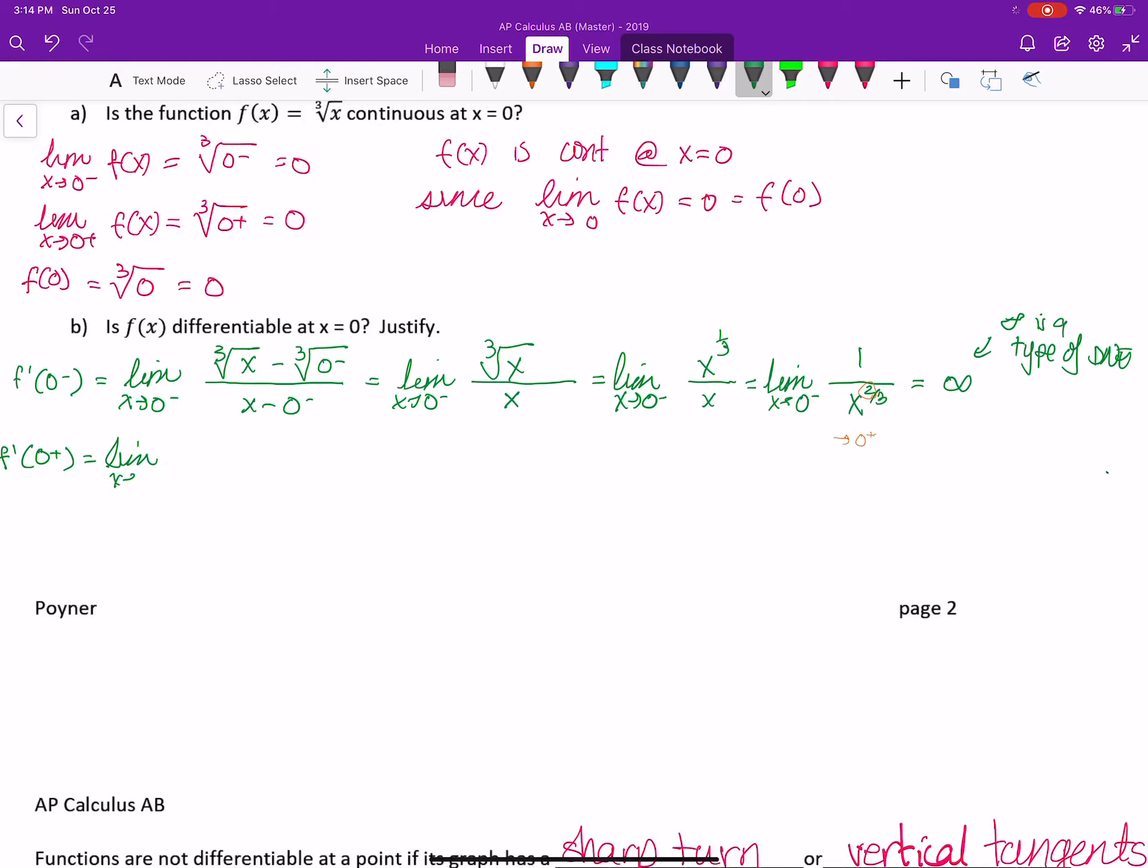The limit as x approaches 0 from the positive side, it's going to be the cube root of x minus the cube root of 0 from the positive side. That is the limit as x approaches 0 from the right of 1 over x to the 2/3. Essentially, the work is very similar. And in this case, it is also just going to approach 0 from the positive side, another type of DNE.